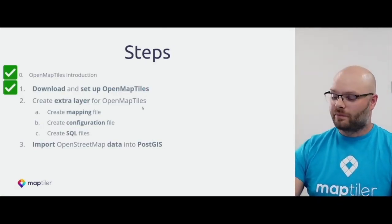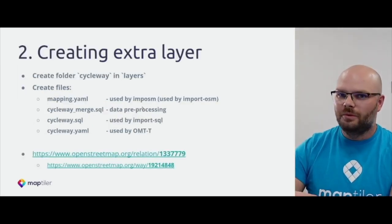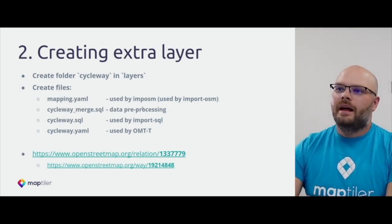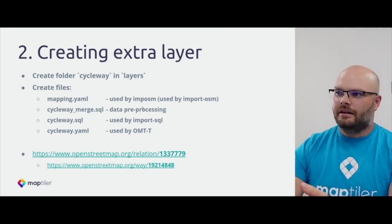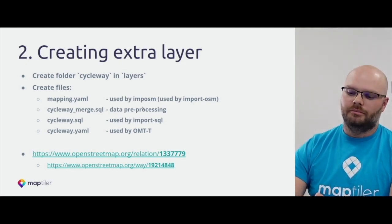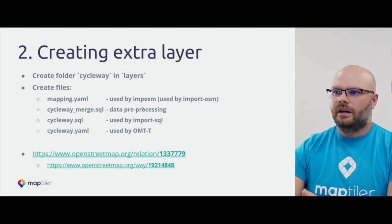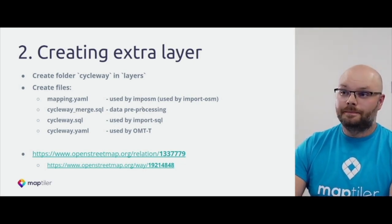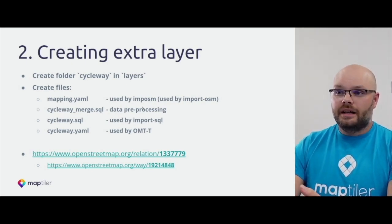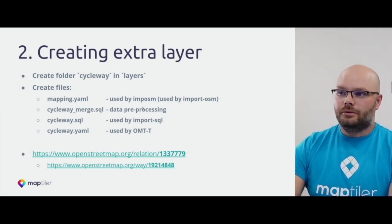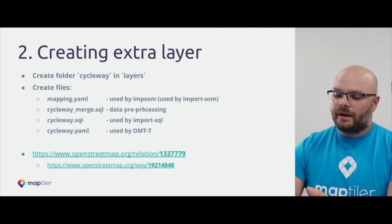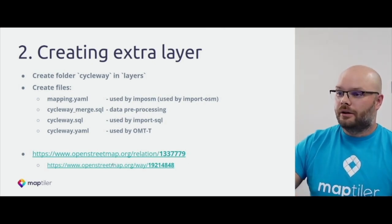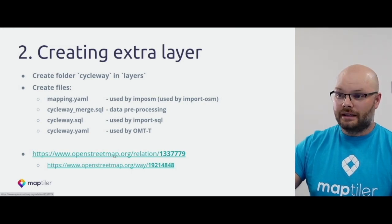The second step is to create an extra layer. For the extra layer in OpenMapTiles we create a new folder called 'cycleway'. We prepare four files: the mapping file, which is used by Imposm to import the PBF into PostgreSQL; then some pre-processing SQL; then 'cycleway.sql', which contains the main function used to create vector tiles; and the last one is 'cycleway.yaml', where the layer configuration is defined. Now I would like to show you how the cycleway looks in OpenStreetMap.